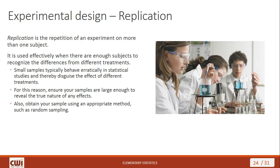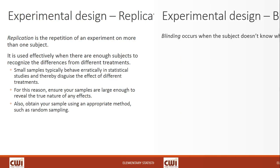Next up is replication. When you have a replicated design, you're repeating the experiment on more than just one subject. Replication is most effectively used when there are enough subjects to recognize the differences from different treatments. Small samples tend to behave erratically in statistical studies, and that erratic behavior tends to disguise the effects of different treatments. You want to ensure your samples are large enough to reveal the true nature of any treatment effects, and that subjects are chosen through an appropriate method such as random sampling.